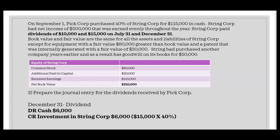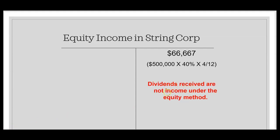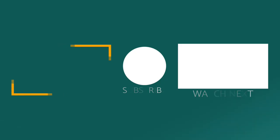Looking at the T-account for Investment in Stringcorp: we started with $115,000 at acquisition, added $66,667 for income in question two, and now reduce it by $6,000 for the dividend in question three — because under the equity method, dividends reduce the investment account. The Equity Income in Stringcorp account was never touched by the dividend entry, so it still holds a balance of $66,667. Hopefully you feel pretty good about the first three questions of this SIM.